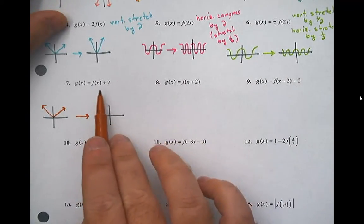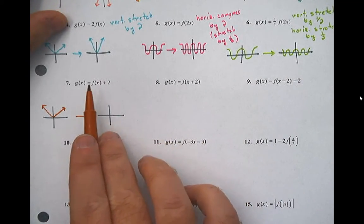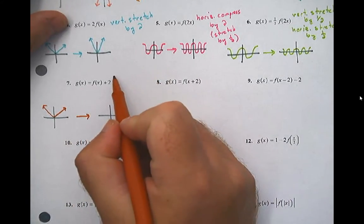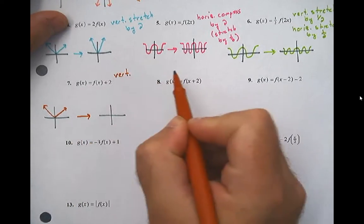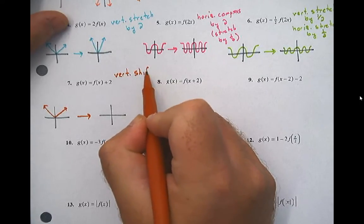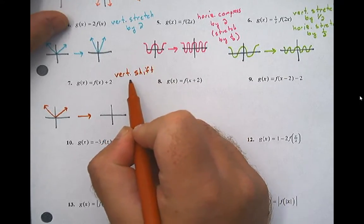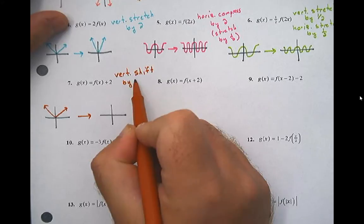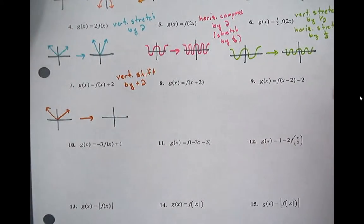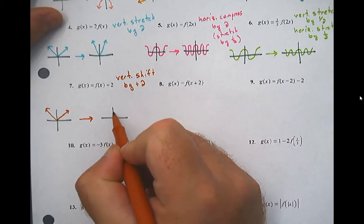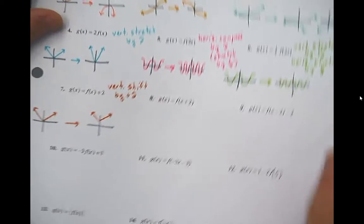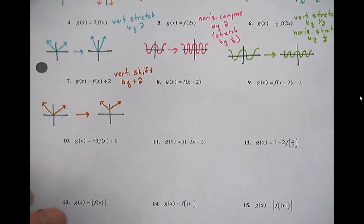This plus two is attached to the function, not attached to x. So that's going to affect my y values. If it's affecting my y values, it's going to be a vertical — we're adding, so that's a shift. A vertical shift by positive two — or you might write 'up two,' that's fine, they mean the same thing. So I would go up two from here.